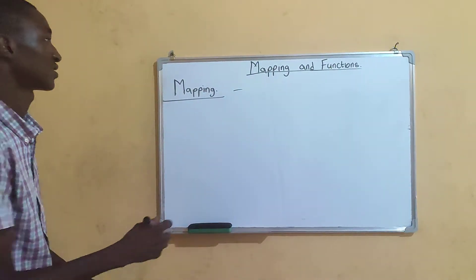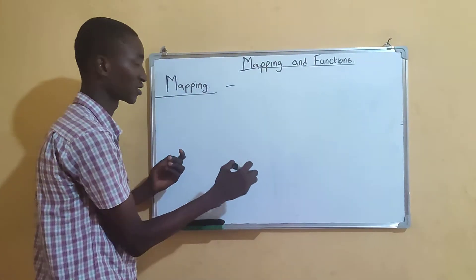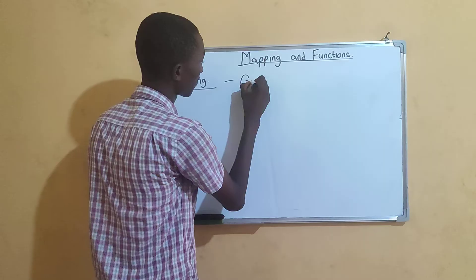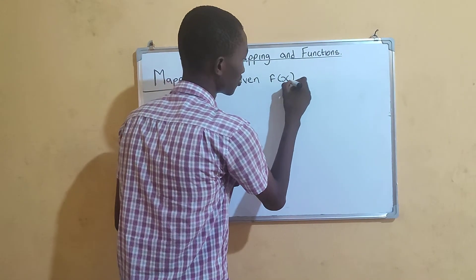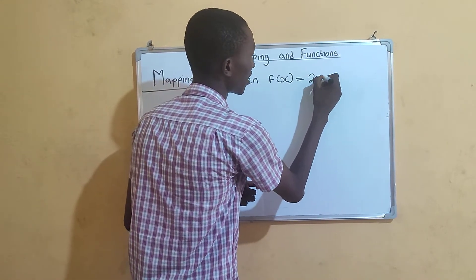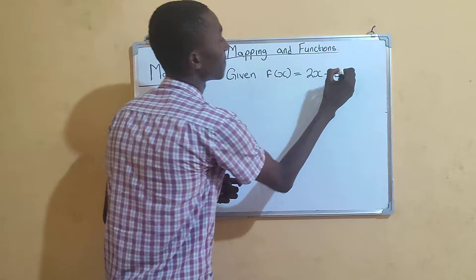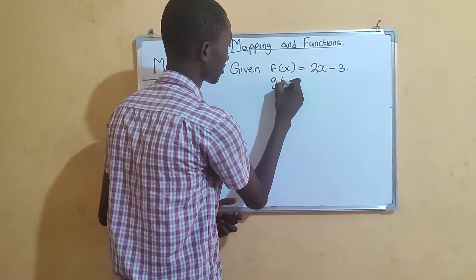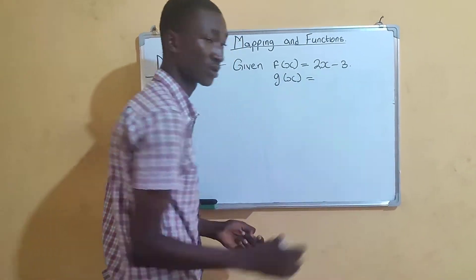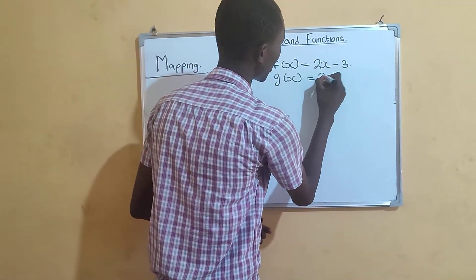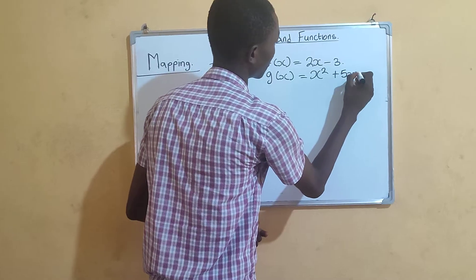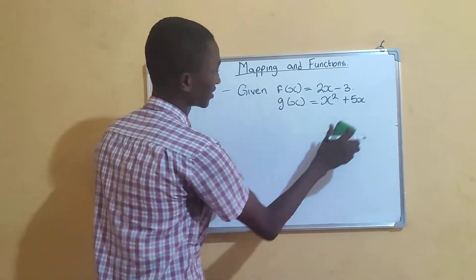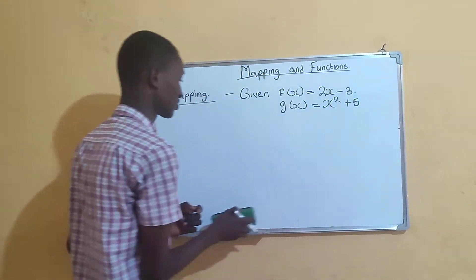Let's say we are given a function: f(x) equals 2x minus 3, then another function g(x) to be x squared plus 5x. For a start, let's just take x squared plus 5.